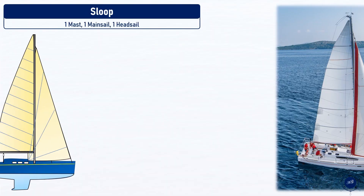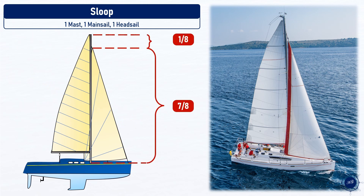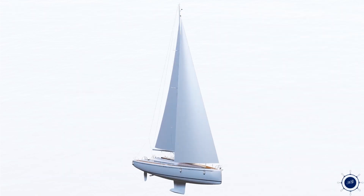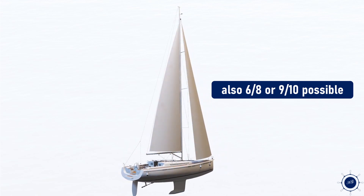Modern sailing yachts are sloop-rigged. A sloop has a mast, a mainsail, and a headsail. A sloop has a so-called 7/8ths rig. The forestay, to which the headsail is attached, is at 7/8ths of the total height of the mast. The ratio can also be 6/8ths or 9/10ths on modern yachts, but the term 7/8ths has prevailed so far.